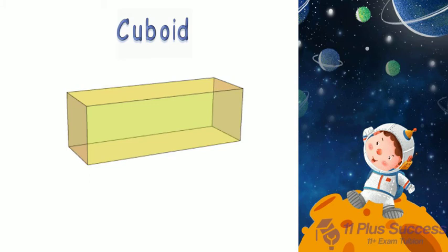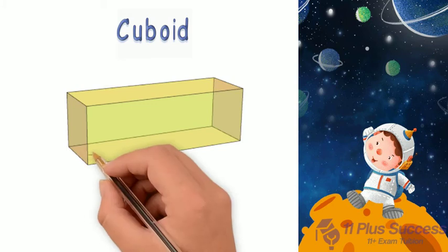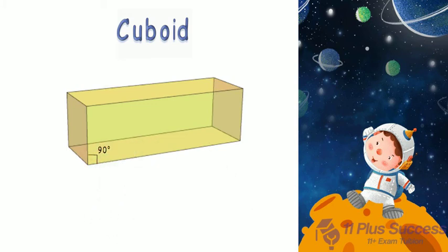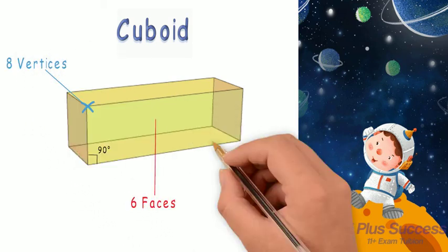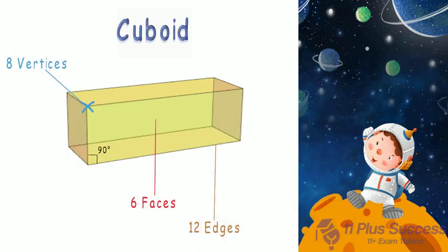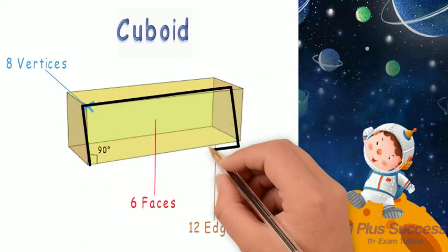Cuboid. A cuboid is a 3D shape where all angles are right angles. A cuboid has 6 faces, 8 vertices, and 12 edges, and each face is a rectangle.